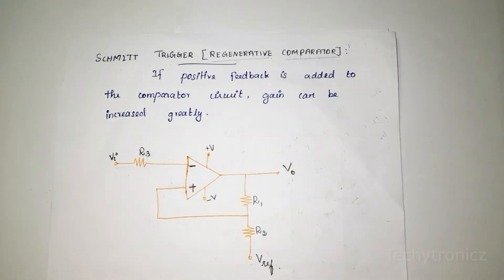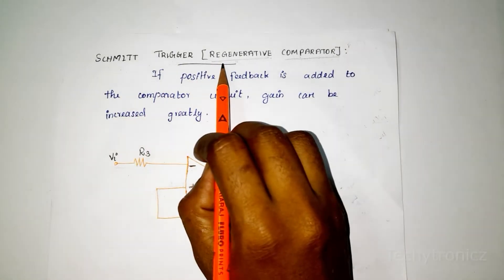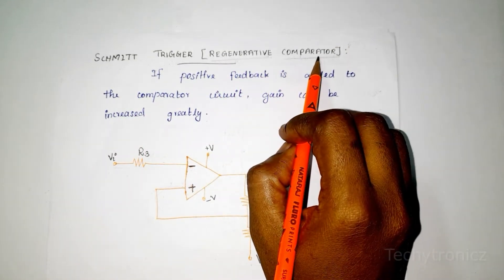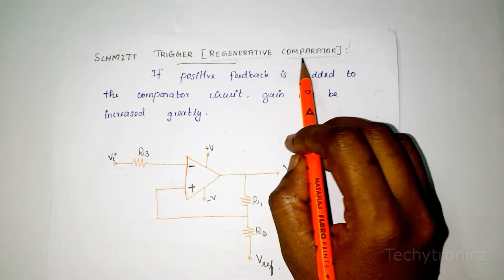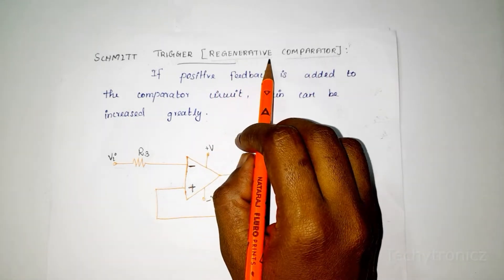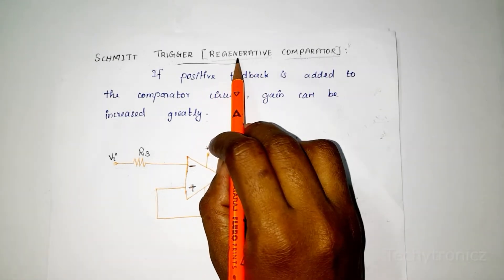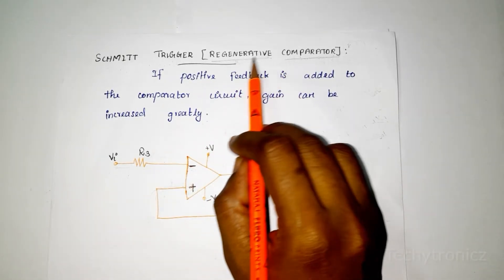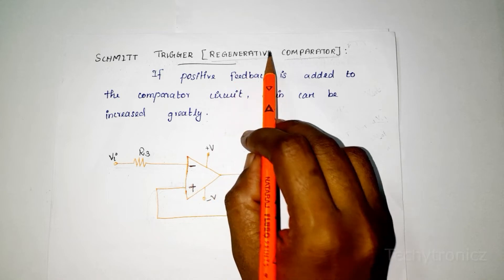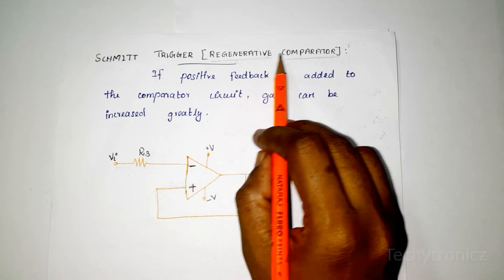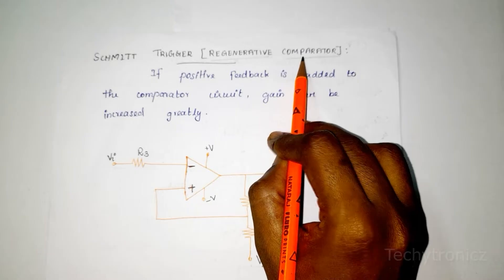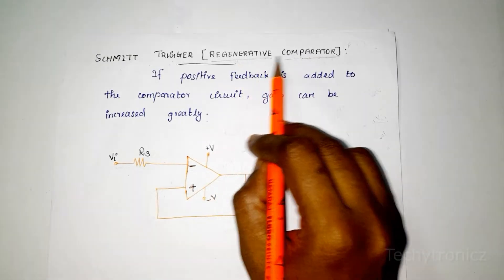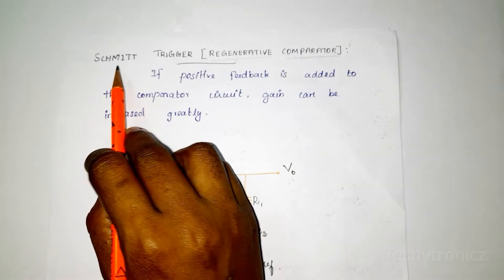Hi students, in this video we are going to learn about Schmitt Trigger using op-amp. The other name of Schmitt Trigger is Regenerative Comparator. Regenerative means positive feedback. So regenerative comparator means if you are adding a positive feedback to the comparator circuit, that is called regenerative comparator or Schmitt Trigger.